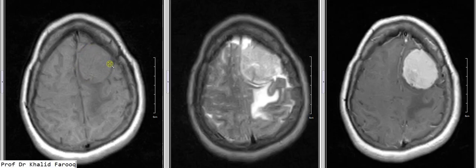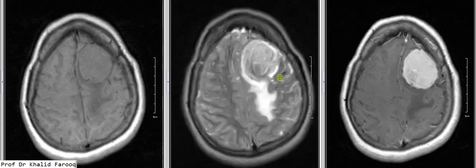We can see there is a solid mass lesion on all these sequences which shows intense homogenous post-contrast enhancement. On axial T2-weighted sequence, we can see a CSF sleeve between the mass and the brain parenchyma, which can be noted on axial T1-weighted sequence as a low signal intensity area, and here we have a high signal intensity area favoring CSF sleeve.